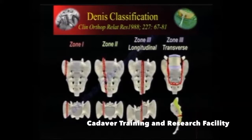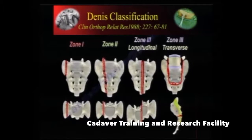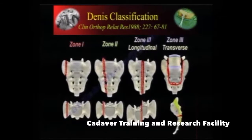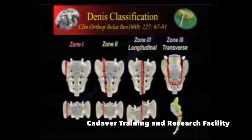Then you have the sacral fractures, and the Denis classification is probably the most extensive part of pelvic classification that most pelvic surgeons use. A zone 1 injury goes through the sacral ala; a zone 2 injury is transforaminal; and zone 3 goes medial to the foramen — it could be a single longitudinal break or a combination with an oblique or transverse connection. The zone 2 injuries are the difficult ones, because you have a risk of damage to the neural foramen, and patients will have problems of bladder and bowel dysfunction.